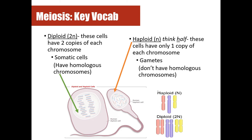Diploid and haploid: diploid is the term we use to describe when we have a full set of chromosomes — that's two copies of each. In humans this is 46, in rats it's 42, in fruit flies it's eight. We represent diploid cells with the symbol 2N to represent two copies of each chromosome. Your somatic cells or body cells are going to be diploid.